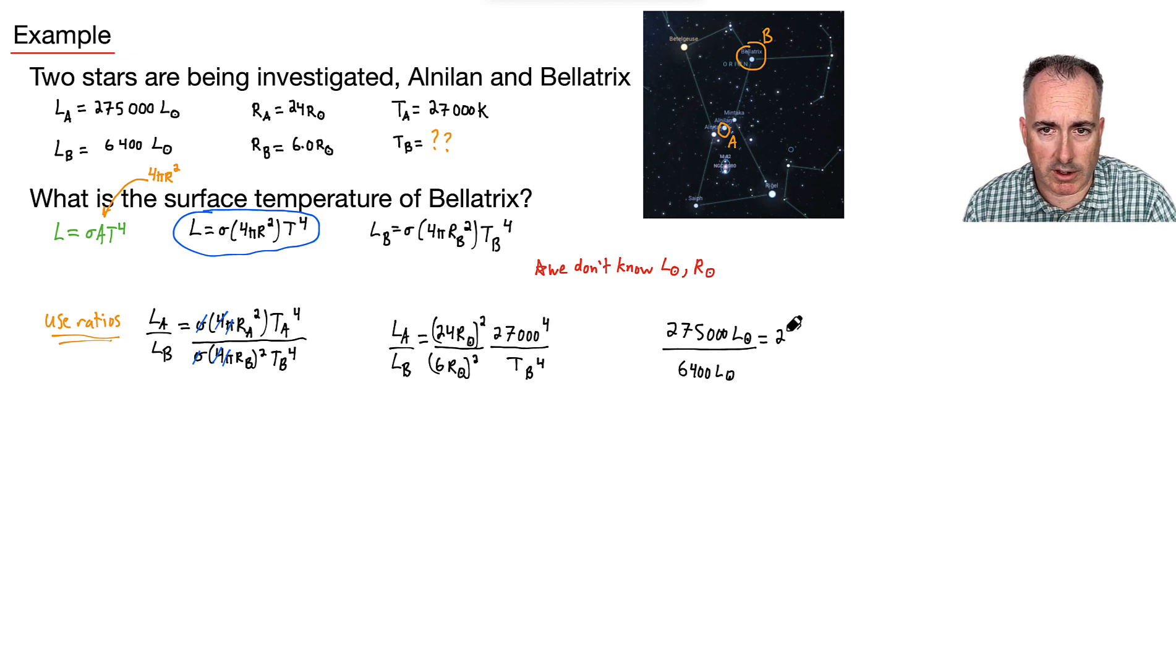It's going to be 24 squared R sun squared. All that over 6 squared R sun squared. All that times 27,000 to the fourth. All that over T to the fourth.